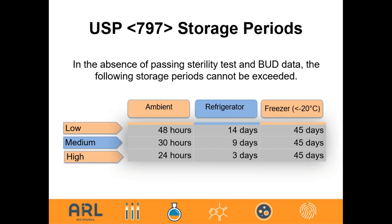For USP 797, storage periods in the absence of sterility testing are currently categorized as low, medium, and high risk. Under the proposed revision, these become category one, two, and three. In the absence of passing sterility tests or beyond-use data, storage periods cannot be exceeded. For example, an existing medium-risk product in a refrigerator has a BUD of nine days. The risk process is clear: the higher the risk, the lower the amount of time granted for the BUD.